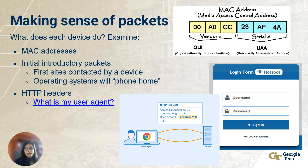Clicking on a packet in the list will provide detailed information about that packet. In the lower panel, you can examine various layers of the packet such as Ethernet, IP, TCP, UDP and application layer data. When you check the PCAP file in Wireshark, look for MAC addresses, introductory packets, initial website connections and more.